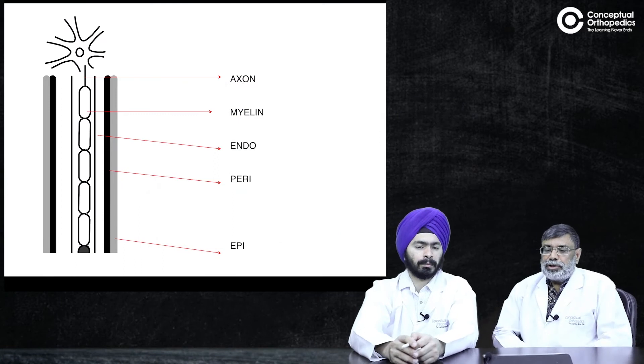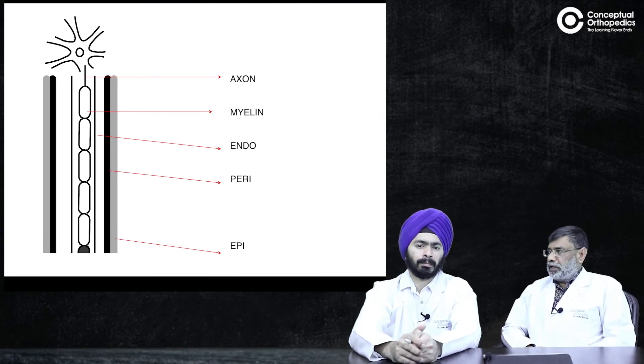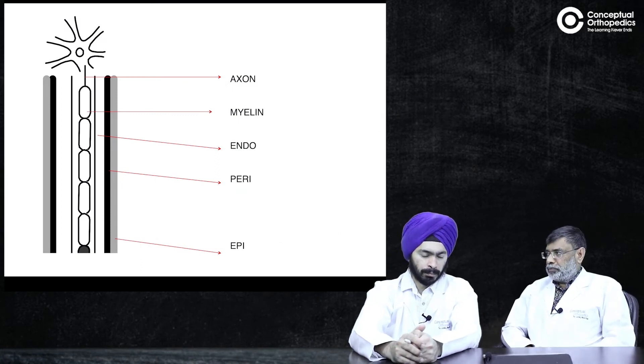What happens in nerve injuries is showing you different things. So let's talk a little bit about nerve injuries and Tinel's signs. For that you have to basically understand the anatomy of the nerve.